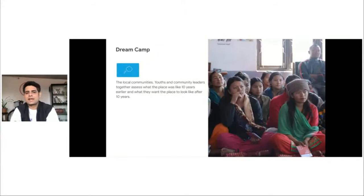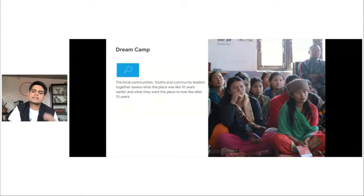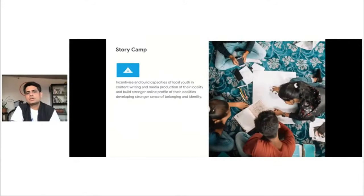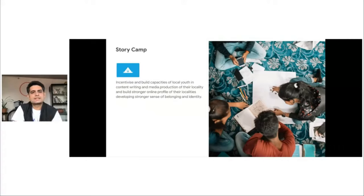In stage one, we do a map camp to collect information about major landmarks, festivals, institutions, historical points, and other important map points to make a digital profile of the community. In the second stage, we do a dream camp. Local communities, youths, and community leaders together assess what the place was like 10 years earlier and what they want it to look like after 10 years. We capture these aspirations in video format and layer it on the same map. Third, we do a story camp to build the capacity of local youth to capture stories of important places, history, and different personalities, and put those stories on the same map.